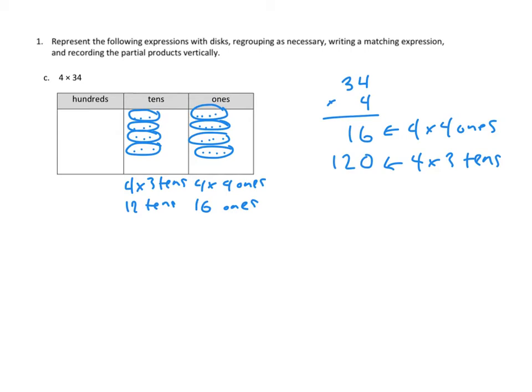Old-school mathematicians will say that we've inserted the zero and then multiplied 4 times 3 to get 12. But notice — that's not actually what we did. In a strict sense, we've taken 4 and multiplied it by 3 tens and gotten 12 tens. The zero is kind of a placeholder to make sure that we write our 12 tens properly in the tens and hundreds place. So we've got some values here, and we might need to do some regrouping.